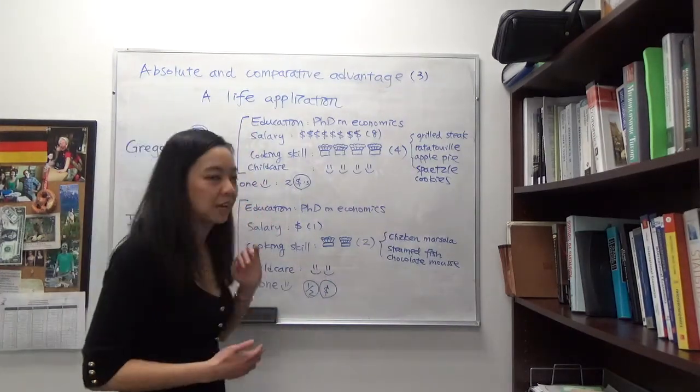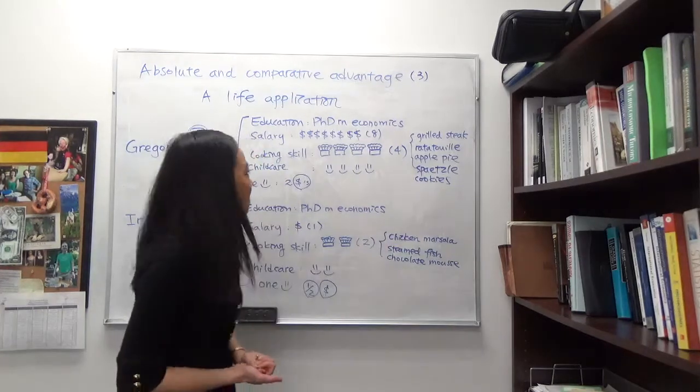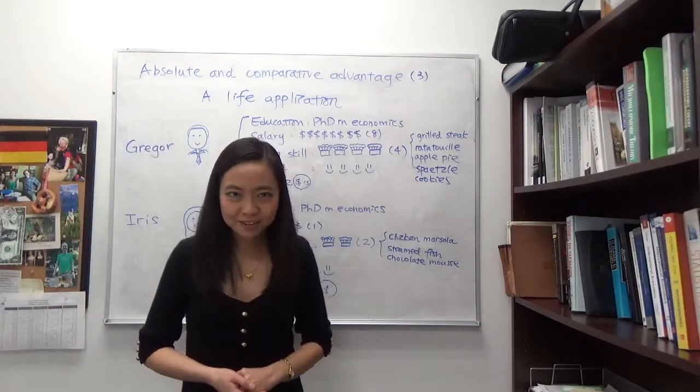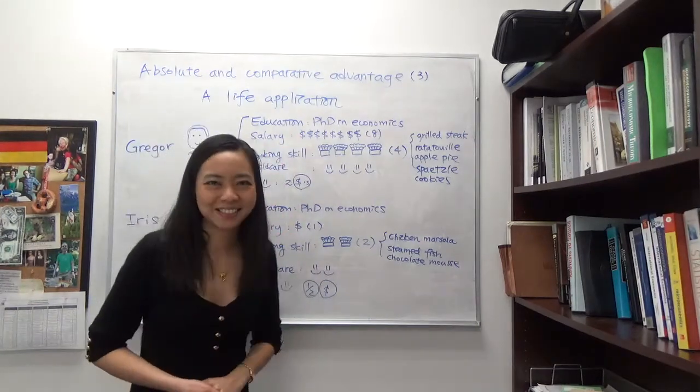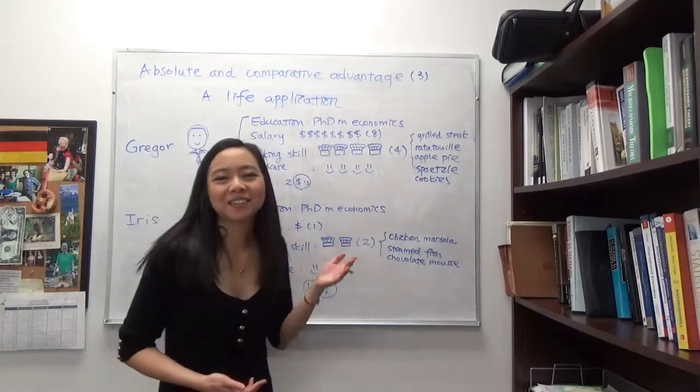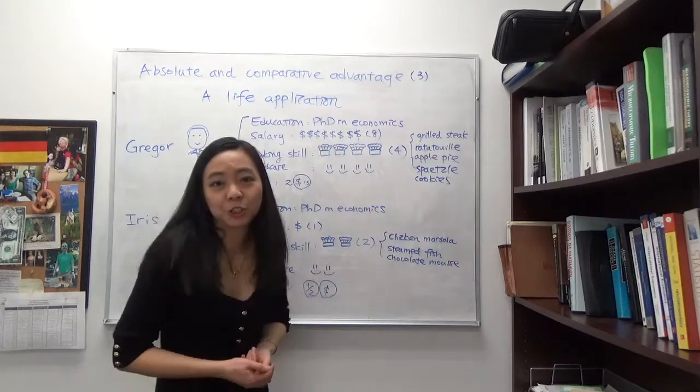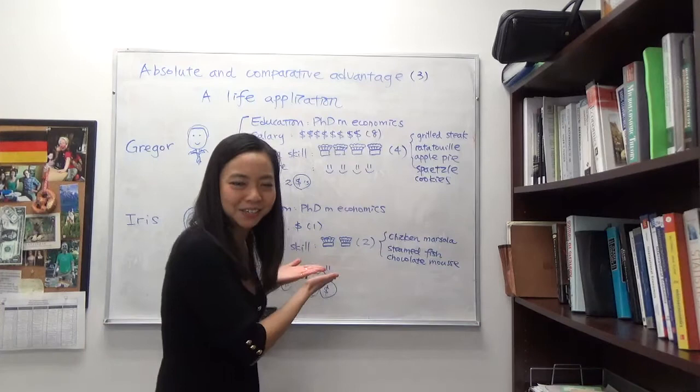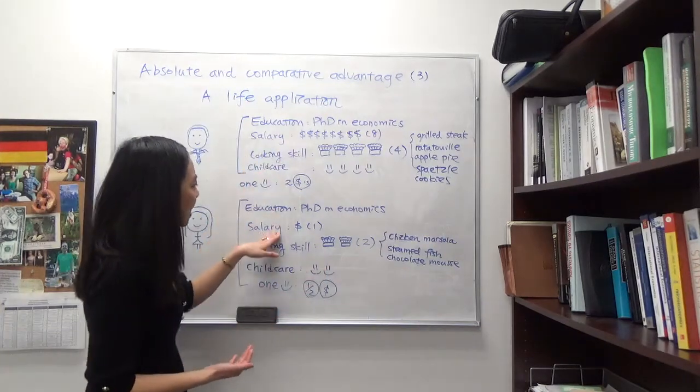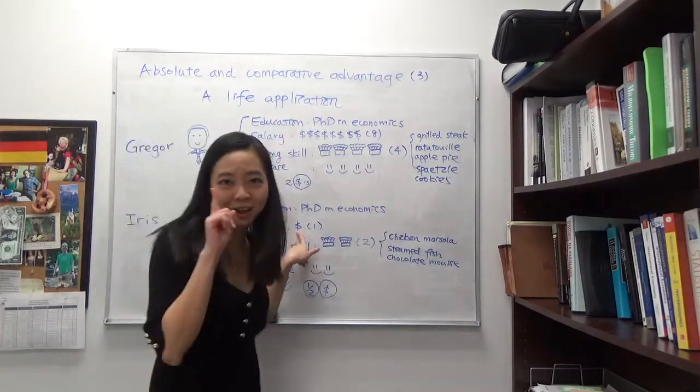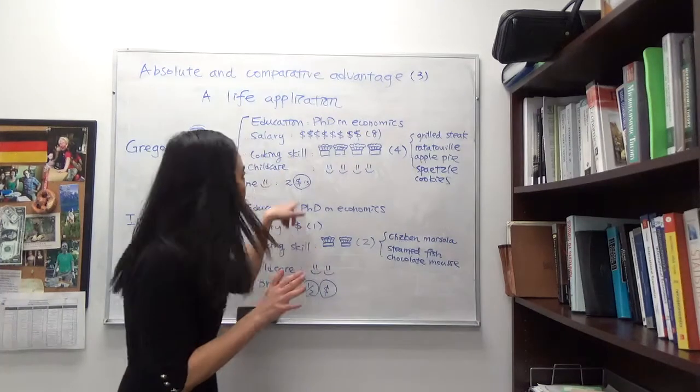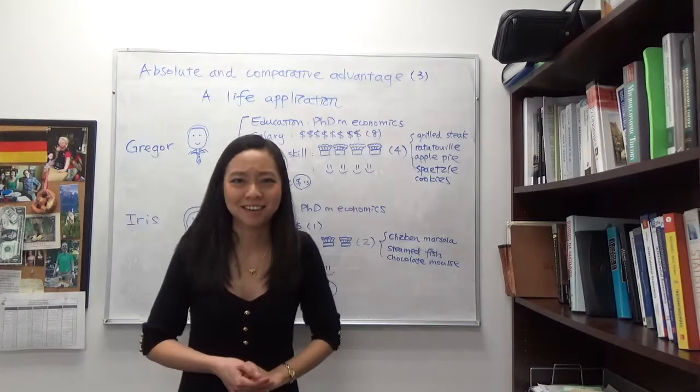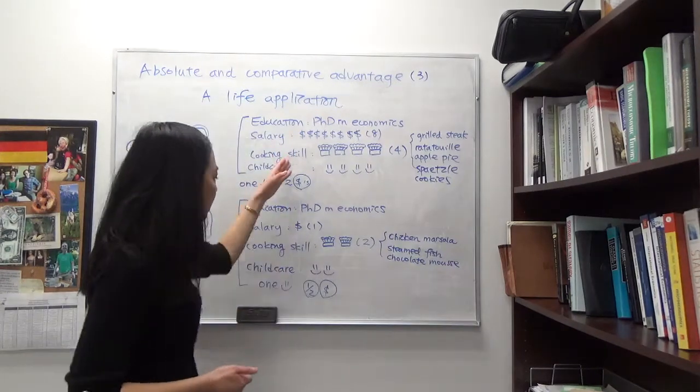Gregor and Iris both have a PhD in economics, but when it comes to salary, because Gregor works for the private industry, he makes a lot more money than Iris. Iris is a teacher, so we all know that teaching is not a job where you can make a lot of money, even though Iris is very happy teaching economics. When it comes to salary, Iris has only one dollar sign, but Gregor has eight dollar signs, so Gregor is making a lot more money than Iris.